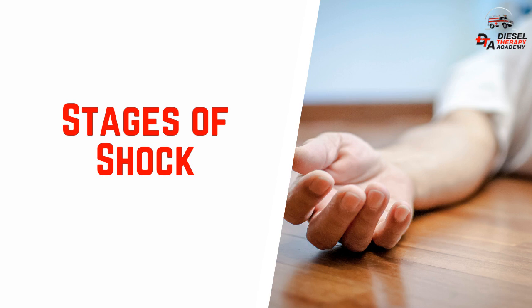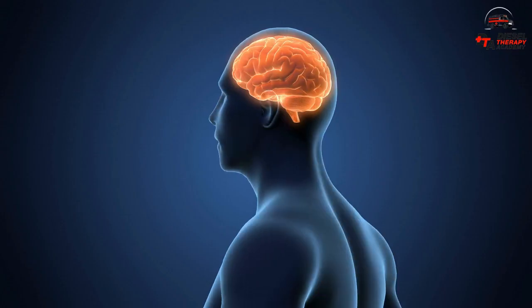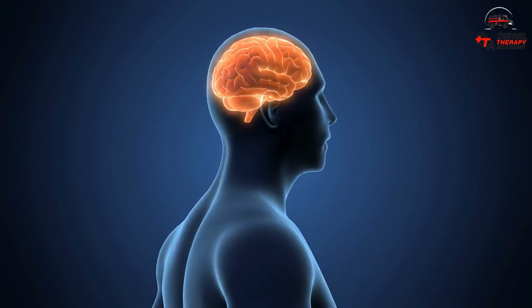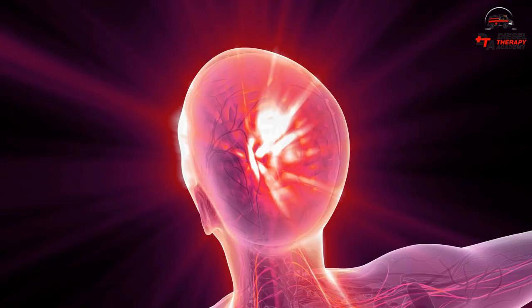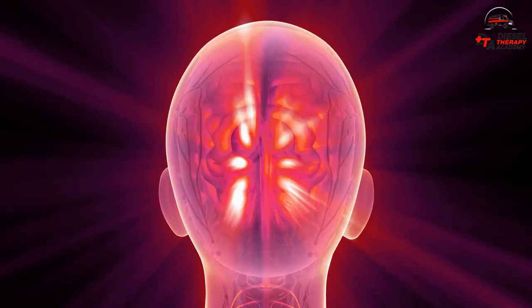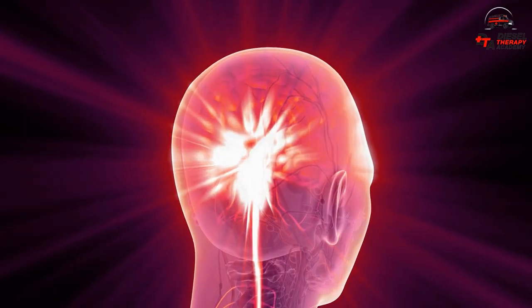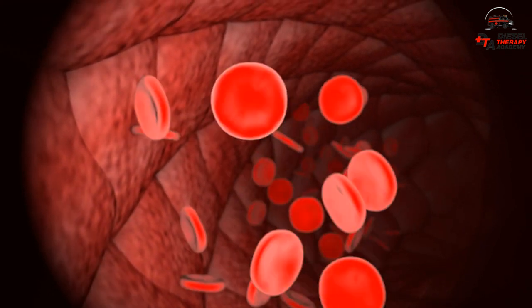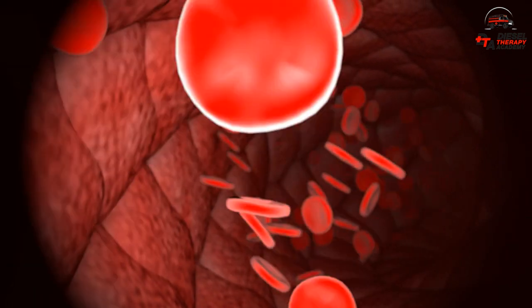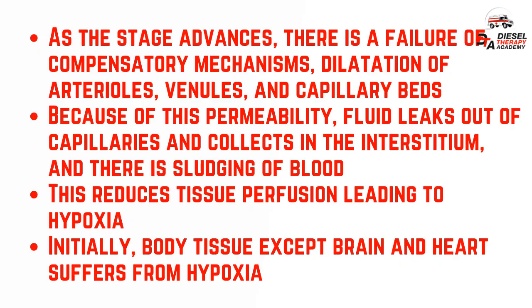Stages of shock. Compensatory shock: the early stages are driven by the sympathetic nervous system's fight-or-flight response, which is stimulated by the activation of the amygdala, hypothalamus, pituitary glands, and adrenal glands. Epinephrine, or adrenaline, is released, causing vasoconstriction, an increase in heart rate, an increase in blood pressure, an increase in respiratory rate, an increased release of glucose to fuel the extra work, and prolonged stress causes a release of cortisol. As the stage advances, there is a failure of compensatory mechanisms, dilatation of arterioles, venules, and capillary beds. Because of this permeability, fluid leaks out of capillaries and collects in the interstitium, and there is sludging of blood. This reduces tissue perfusion leading to hypoxia.